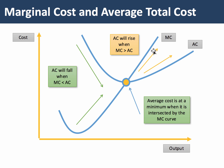Thereafter, marginal cost is now rising above average cost, and that's dragging up the average. So where the marginal cost is above the average, the average will rise. That's the basic marginal-average relationship.